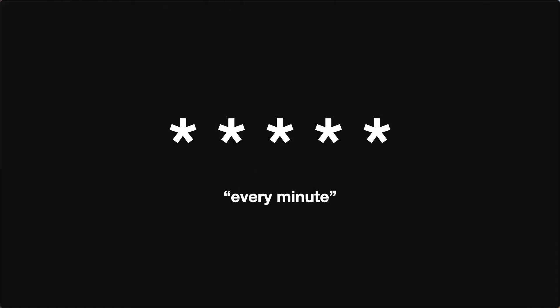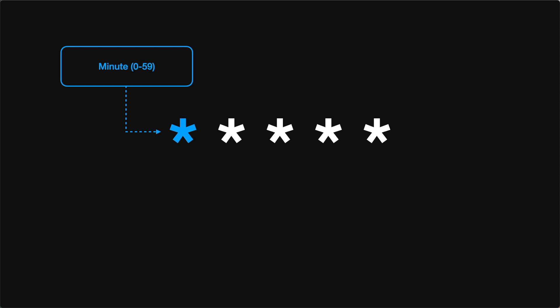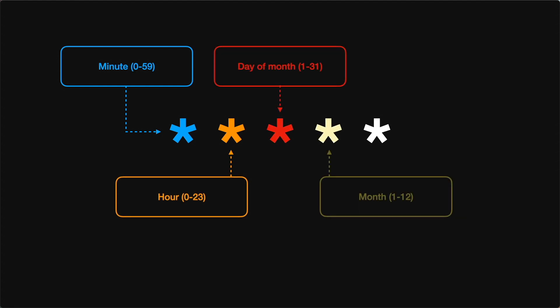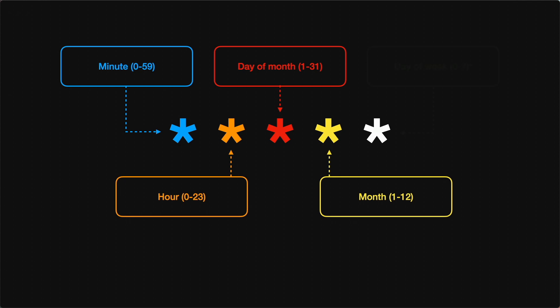The cron syntax often looks something like five stars. In this example, the five stars essentially indicates to cron that the job should run every single minute. Each one of these five positions means something very specific to the cron system. The first position is for the minute — values 0 through 59. The second position is the hour. The third is the day of the month from 1 through 31. The fourth position is the month itself from 1 through 12. And then the fifth position is the day of the week, 0 through 7 — where both 0 and 7 indicate Sunday.